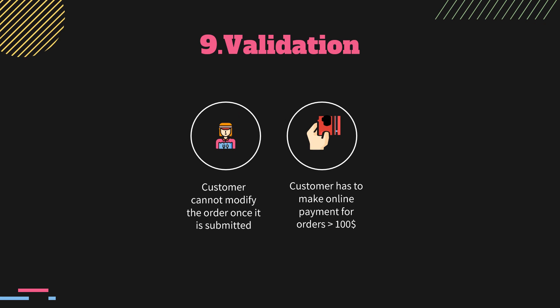Section 9: Validation. The Validation section is optional but can help a functional requirements document. It lists the various criteria to ensure that the system is functional and working as intended, and is beneficial in ensuring that business use cases are working as expected. Two sample business scenarios from our case study that the QA team must validate: Number 1 — a customer cannot modify the order once it has been submitted; Number 2 — a customer has to make an online payment for orders greater than $100.